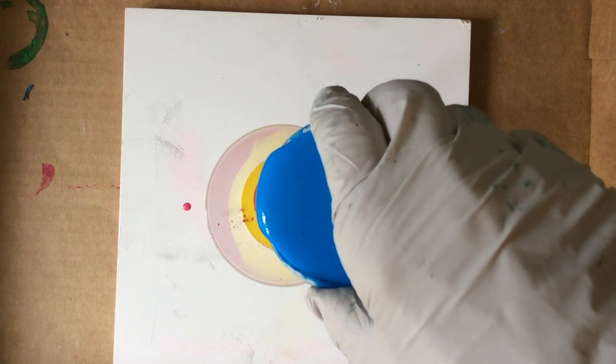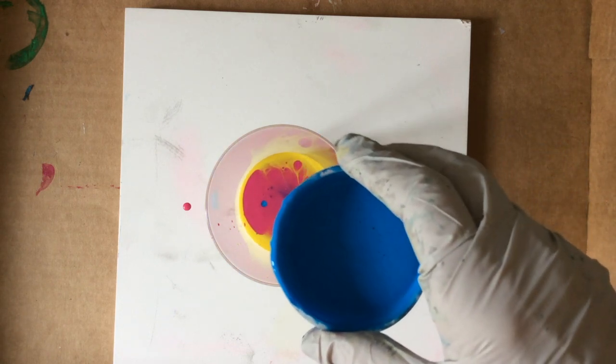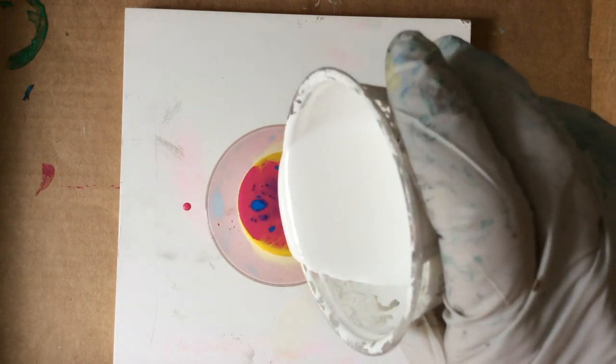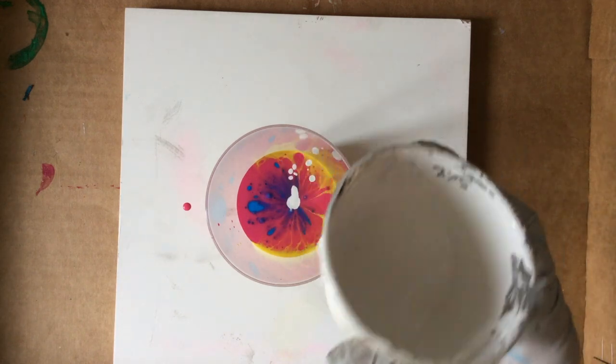In other words, two parts flow trowel to one part yellow, red and blue. Then adding two drops of silicone, but not to white.